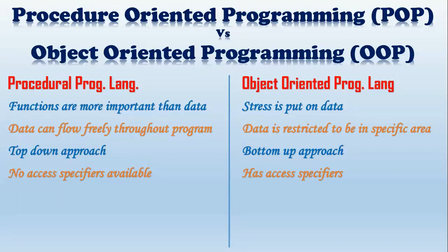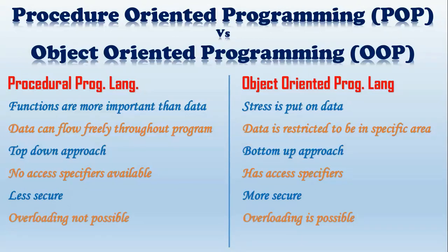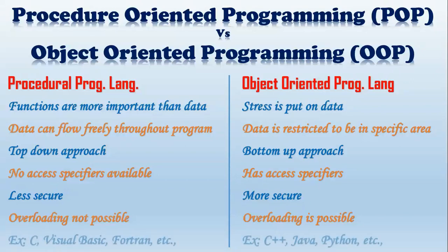There are some keywords for access specifiers, but in procedural programming they are not present, making procedural programming less secure, while object oriented programming is more secure. Overloading is not possible in procedural programming, but in object oriented programming, overloading is possible — you will learn what overloading is in upcoming classes. Examples for procedural programming are C, Visual Basic, Fortran, and R. Examples for object oriented programming are C++, Java, Python, and others.